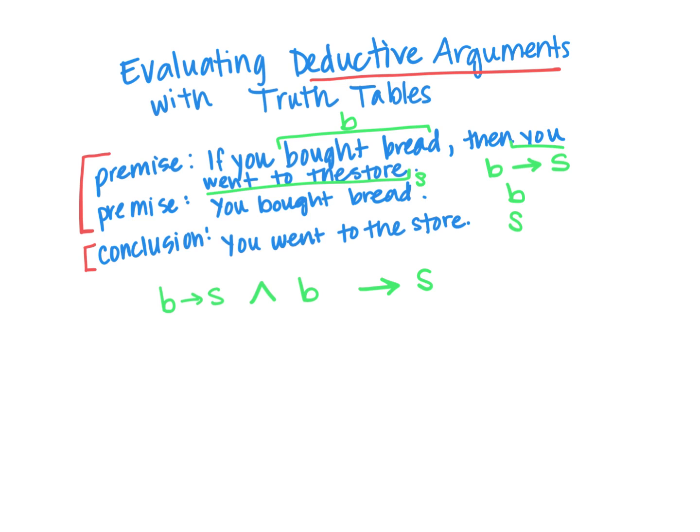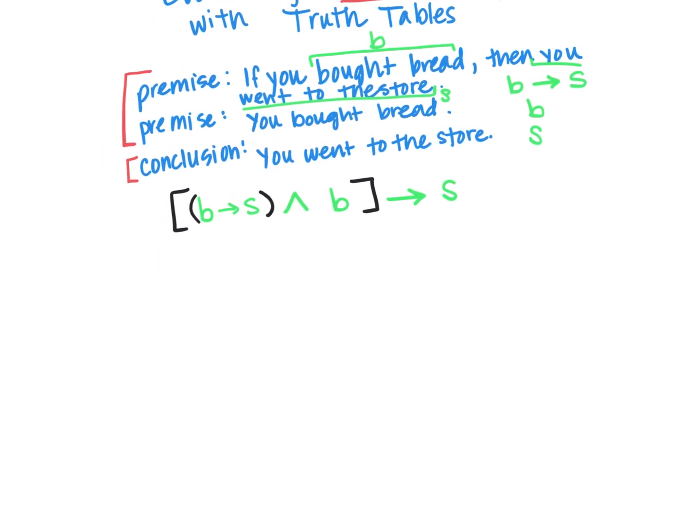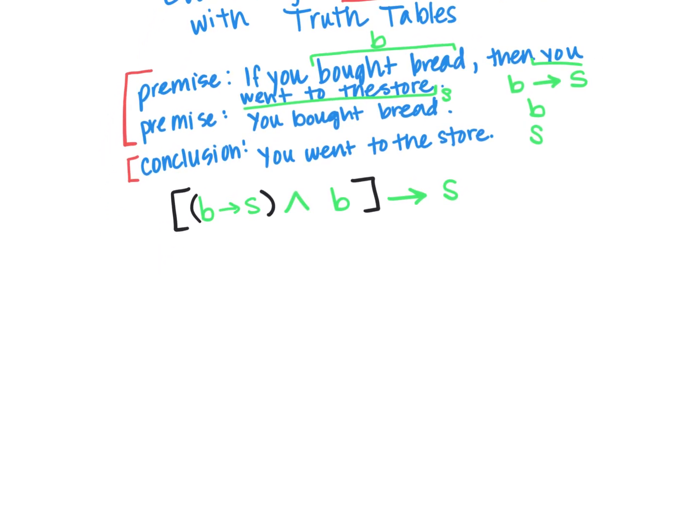And let me put some parentheses in here just to keep track. And we're going to take all of that, put the big brackets on there, just because we want them to imply that conclusion. So what we want to have happen is to have all trues for this statement.